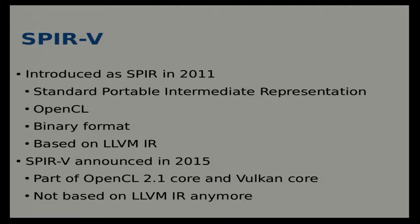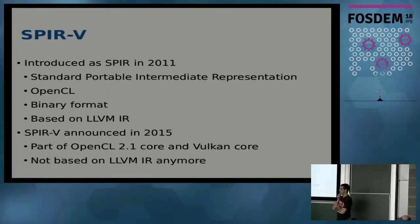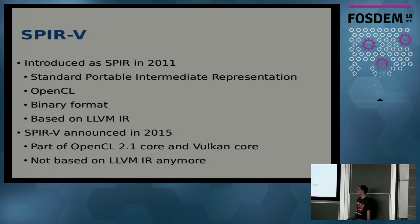Then we have SPIR-V. It was initially introduced as just SPIR for OpenGL — in this case it's a binary format, which solves the privacy problem. Initially it was based on LLVM, and then SPIR-V was announced in 2015 and became part of OpenGL 2.1 and Vulkan — that's probably the reason they added the V. At that point it stopped being based on LLVM and became its own spec.